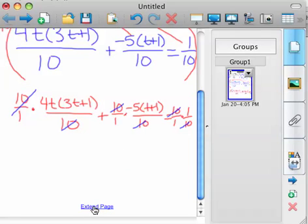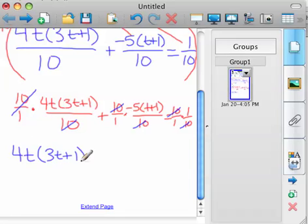And so you're left with a much more manageable equation of 4t times 3t plus 1 plus negative 5 times t plus 1 equals 1.